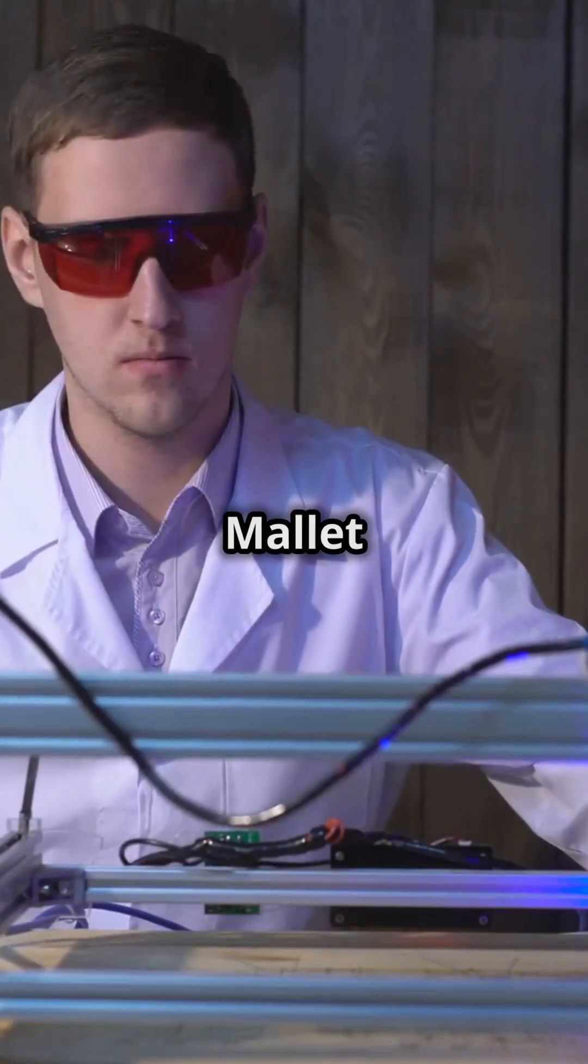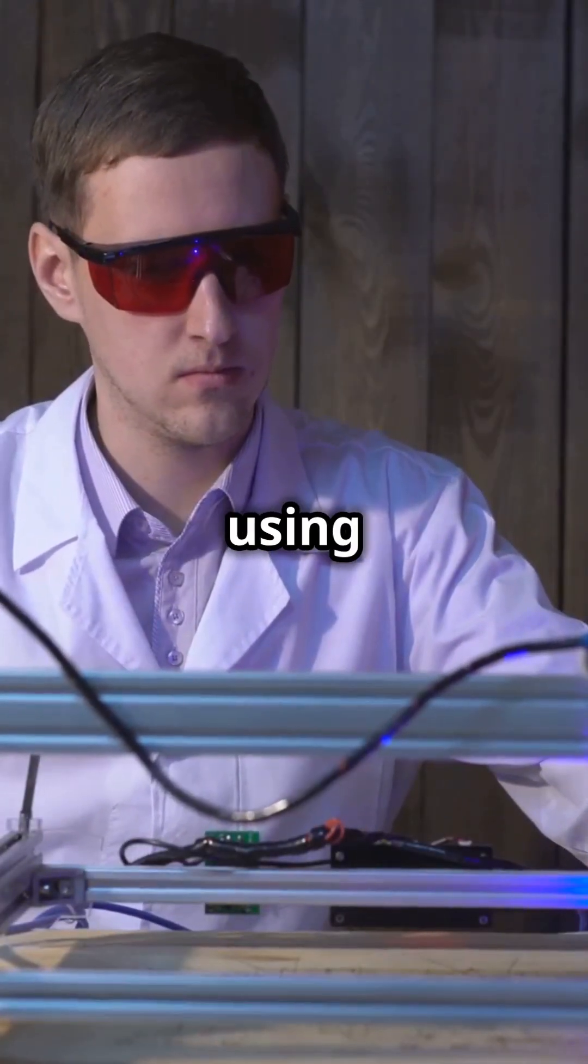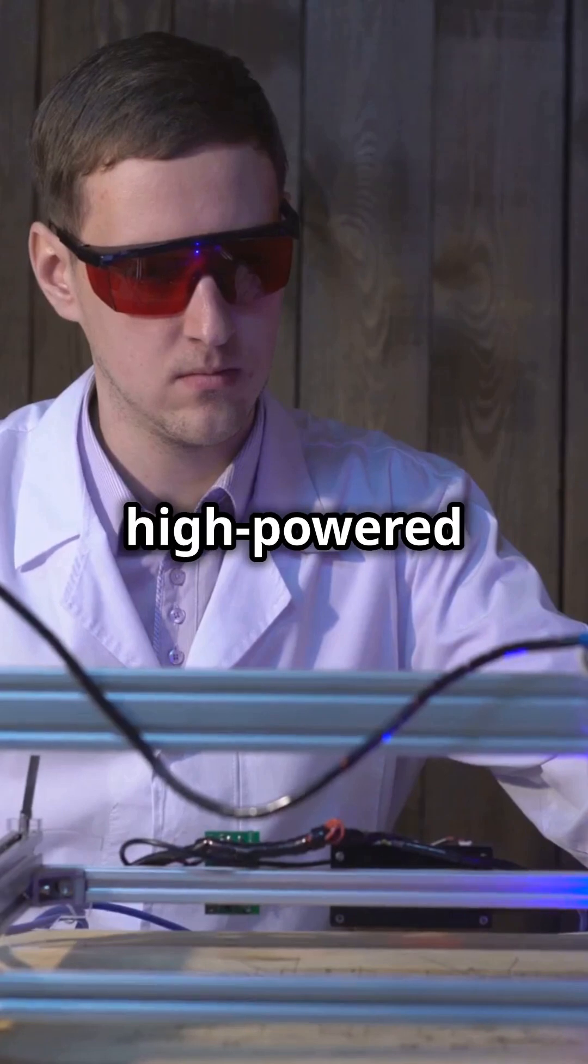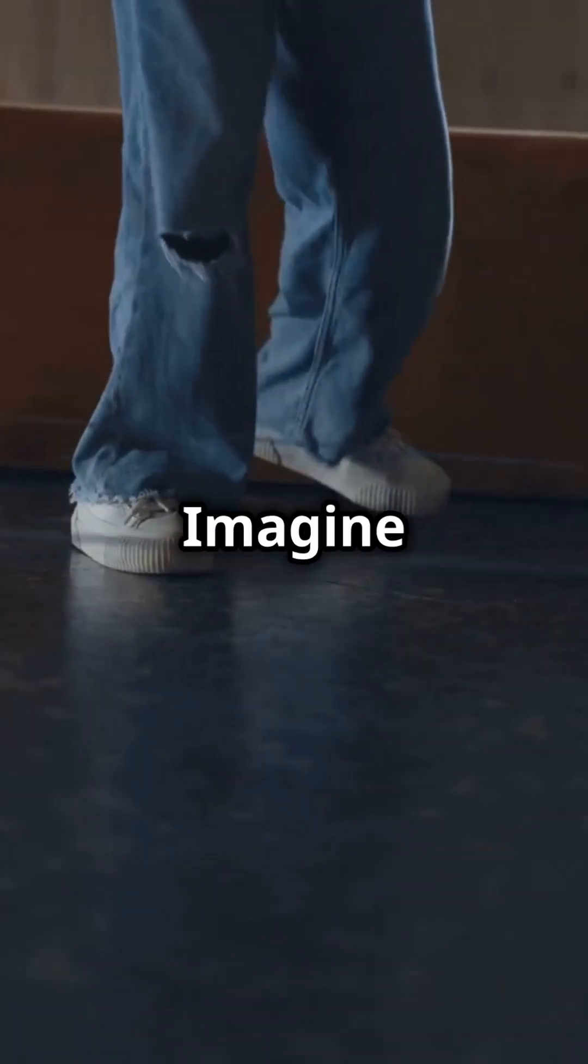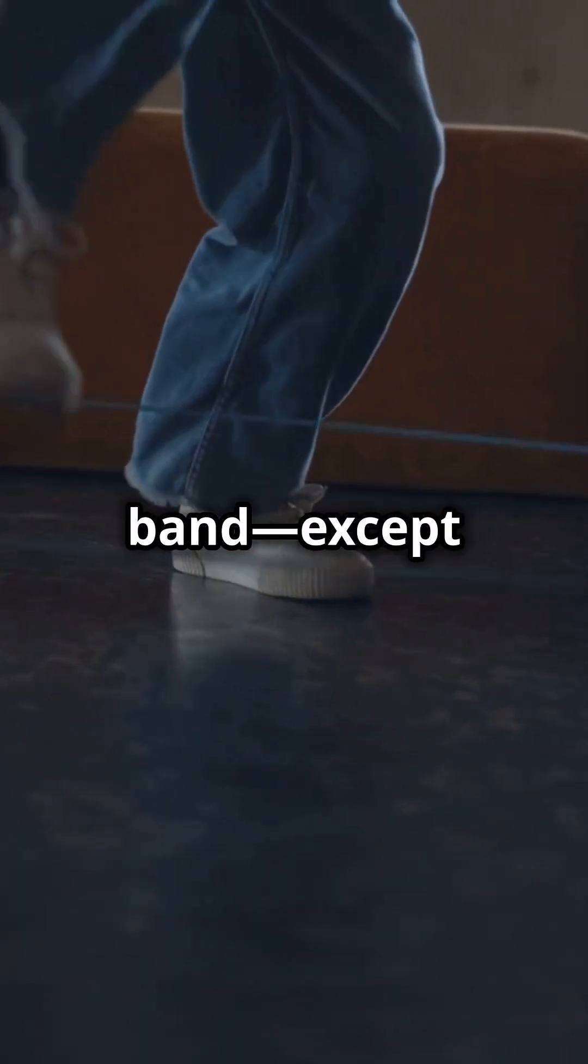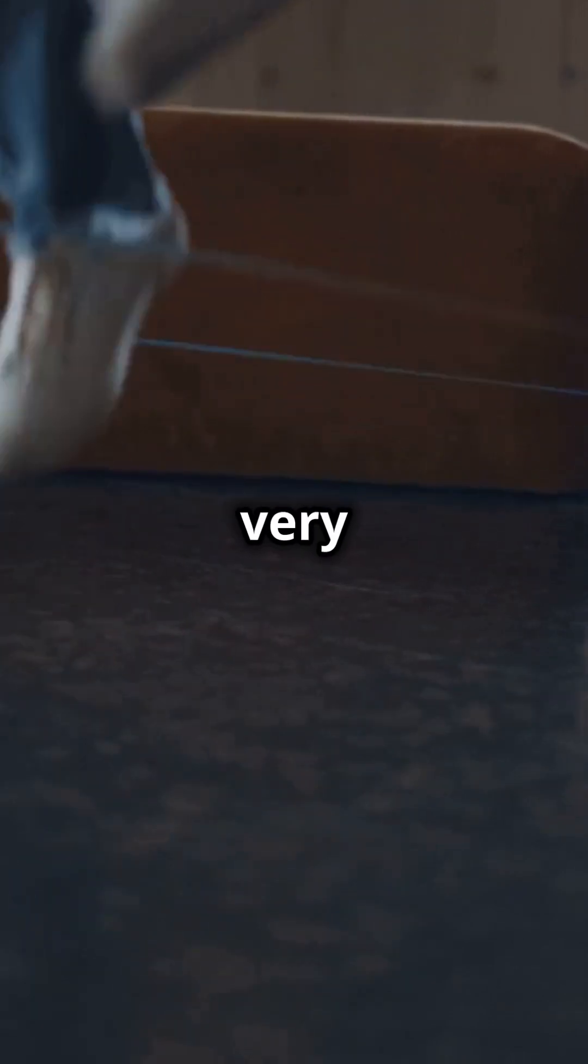Well, physicist Ronald Mallet thinks it could be possible, using a circular arrangement of high-powered lasers. These lasers could create a gravitational field so strong that it warps space-time itself. Imagine it like stretching a rubber band, except instead of a rubber band it's the very fabric of time.